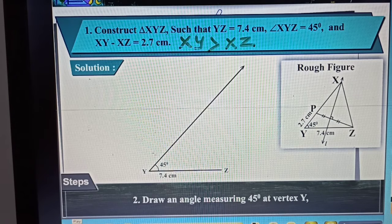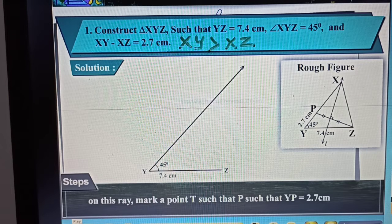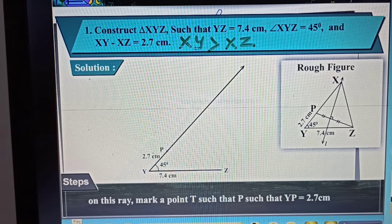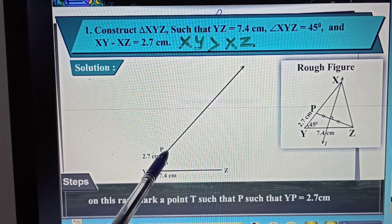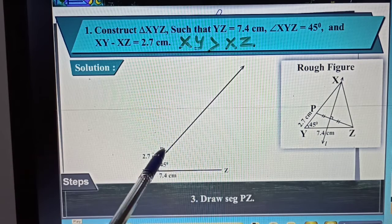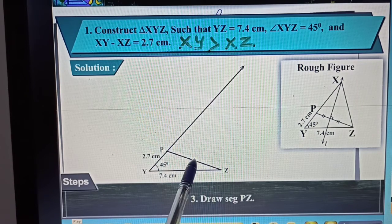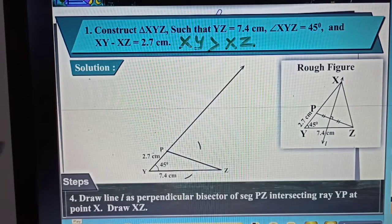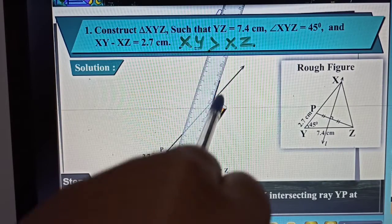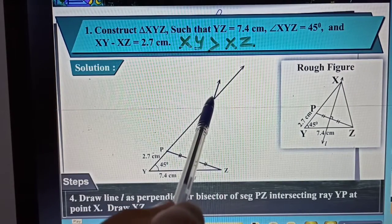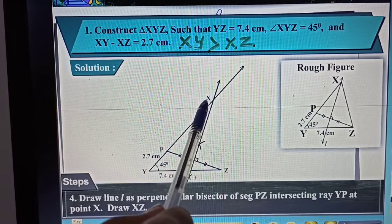According to the first statement, if the third point is away from the angle point, we will take the distance above the base. So here I will take any point P, 2.7 cm distance. Now I will join this point, then I will draw the perpendicular bisector. When we join here, this point will be your third point, that is X.